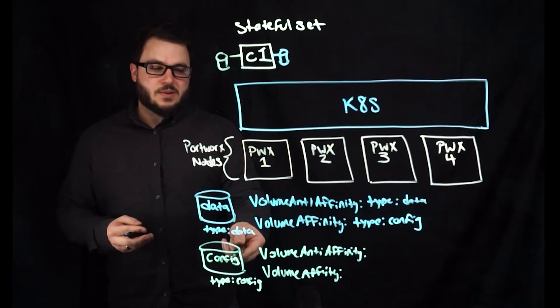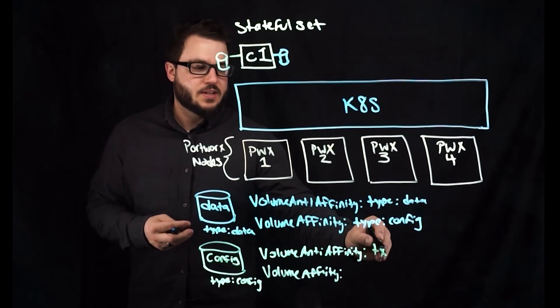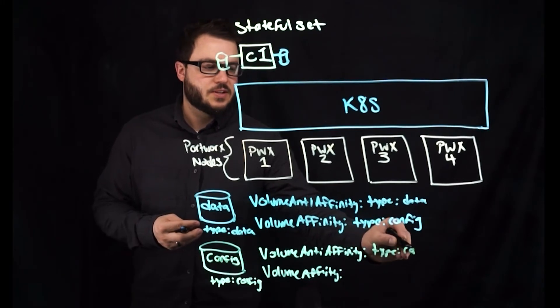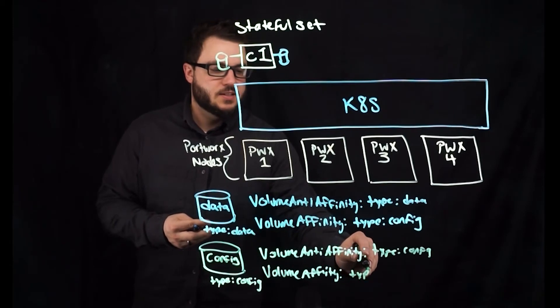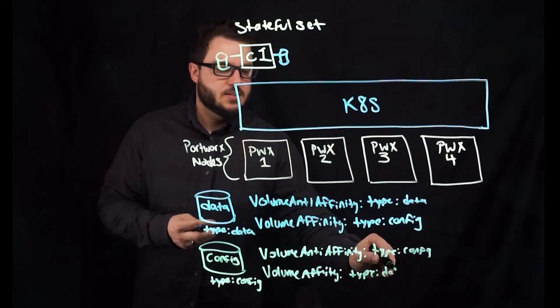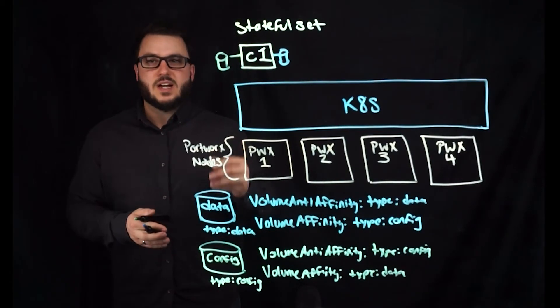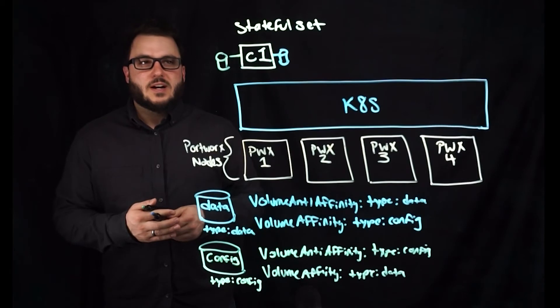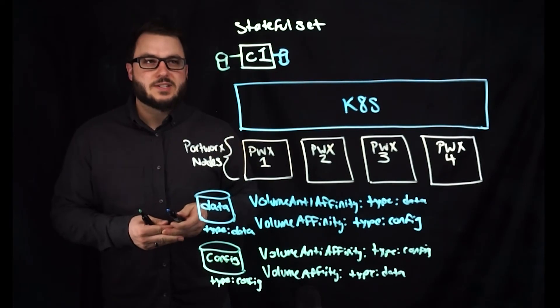So we can do the same thing with our configuration and say my anti-affinity don't land next to other configuration volumes, but do land next to other data volumes. And what this does is it allows for the volume of each node to be placed according to the volume placement strategy.